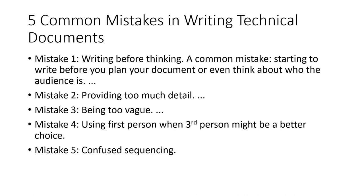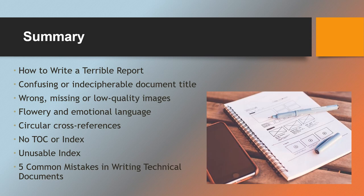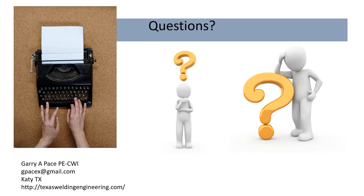So those are five common mistakes in technical writing documents. Summary — how to write a terrible report: confusing or indecipherable document title, wrong, missing, or low-quality images, flowery and emotional language, circular cross-references, no table of contents or index, an unusable index, and five common mistakes in writing technical documents. That's what we covered. Questions? Contact Gary A. Pace, PE, CWI, Katy, Texas at TexasWeldingEngineering.com, and I'll try and see what I can do to help you.